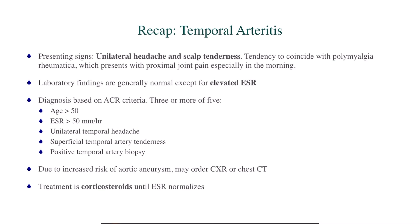To recap: the presenting signs of temporal arteritis are unilateral headache and scalp tenderness, often coinciding with PMR presenting as proximal joint pain especially in the morning. Lab findings are generally normal except for elevated ESR and CRP. Diagnosis is based on the ACR criteria — three or more of the five. Due to increased risk of aortic aneurysm, you may order a chest X-ray or chest CT. Treatment is corticosteroids, started as soon as the diagnosis is presumptive — you do not need to wait for a formal diagnosis given the high risk of blindness. Continue corticosteroids until the ESR normalizes.